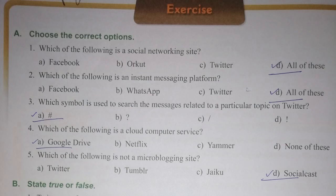Choose the correct options. Which of the following is a social networking site: Facebook, Twitter, or all of these? Yes, all of these are social networking sites. Next, which of the following is an instant messaging platform: Facebook, WhatsApp, Twitter, or all of these? Yes, again all of these will be the correct answer.